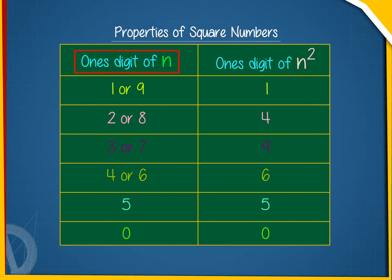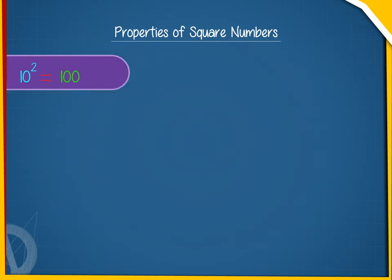Ones digit of n: 1 or 9 gives 1; 2 or 8 gives 4; 3 or 7 gives 9; 4 or 6 gives 6; 5 gives 5; 0 gives 0.